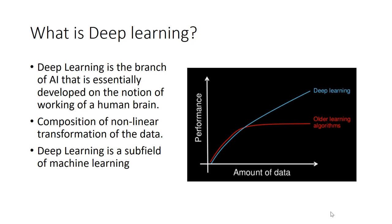Now what is deep learning? Deep learning is the branch of artificial intelligence that is essentially developed on the notion of working of our human brain. Earlier researchers used to use older machine learning algorithms for sentiment analysis. Research shows that older learning algorithms give the same performance when the data is limited. But in the case of deep learning, this is not the case. As the amount of data increases, the performance also increases almost linearly. So we can call deep learning a subfield of machine learning which is currently performing better than the older machine learning algorithms.